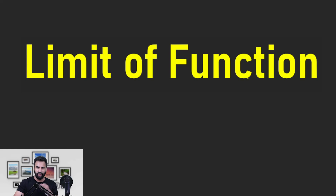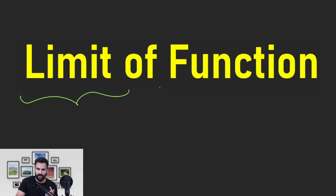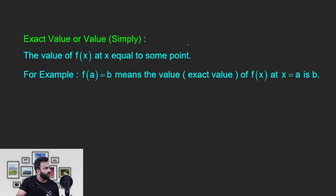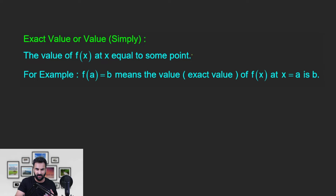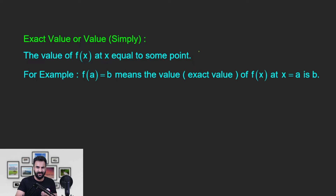Limit of function. पहले तो यह समझते हैं कि limit का मतलब क्या होता है। एक बार इसका meaning समझ में आ जाए, तब इस chapter में बहुत ही amazing feel आती है। Exact value — जिसको हम normal भाषा में बोलते हैं — अगर कोई function है और मैं किसी point पर उस function की value पूछ रहा हूं, तो हम x equal to a substitute कर देते हैं और जो output आता है, that is the value of that function at that point.